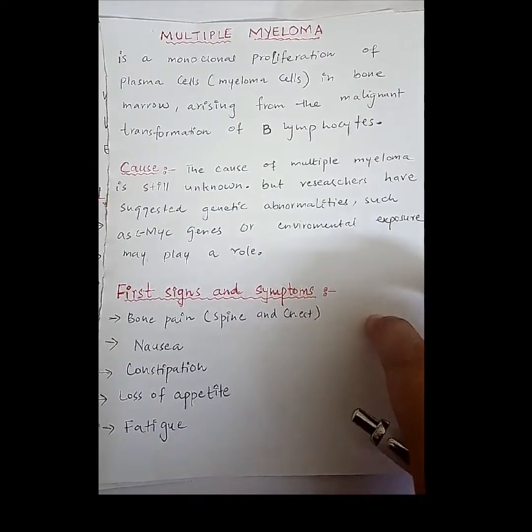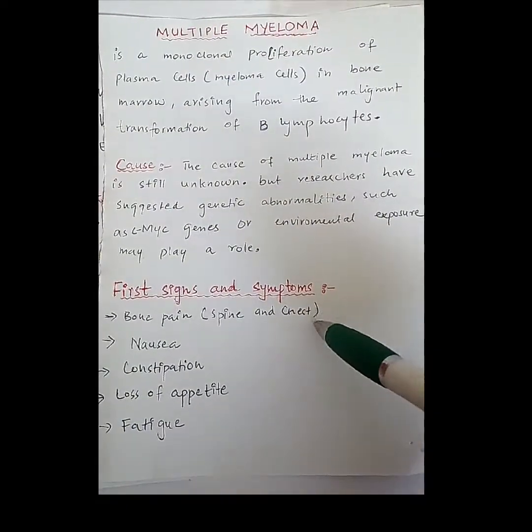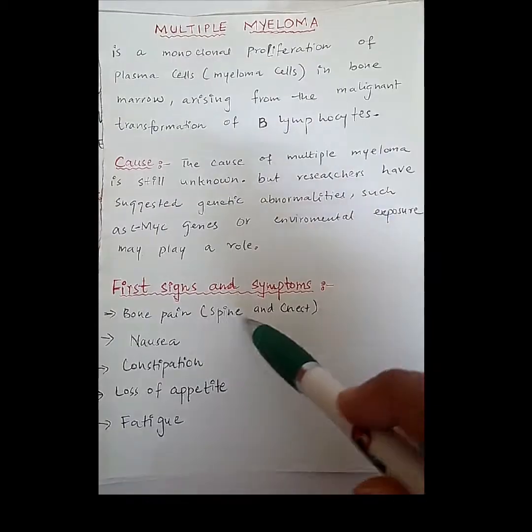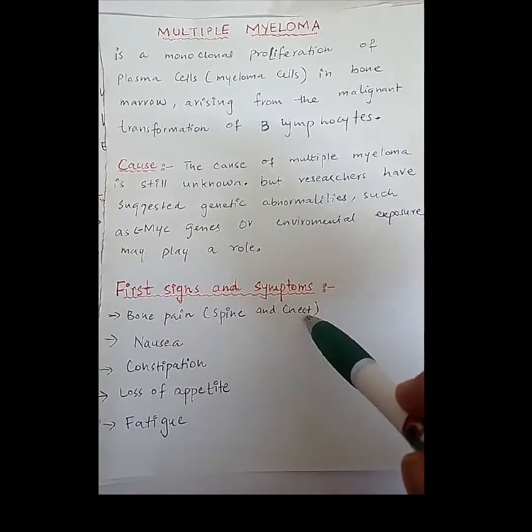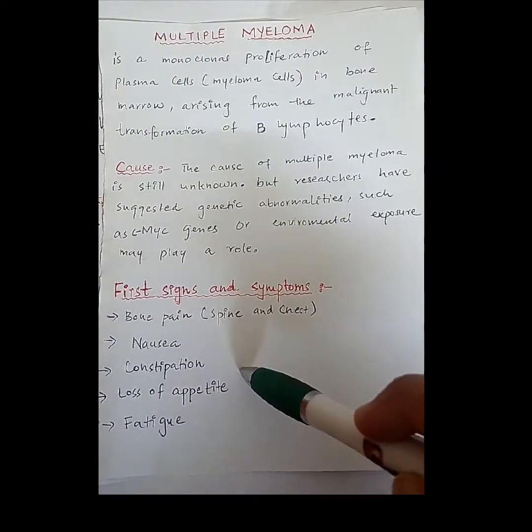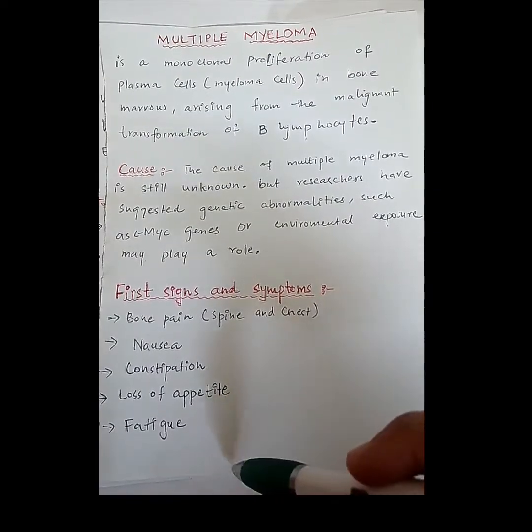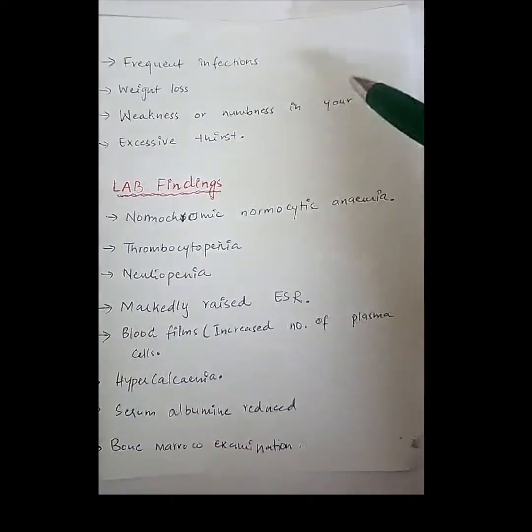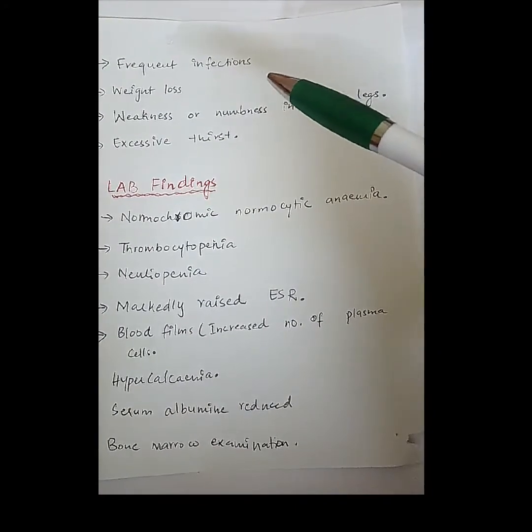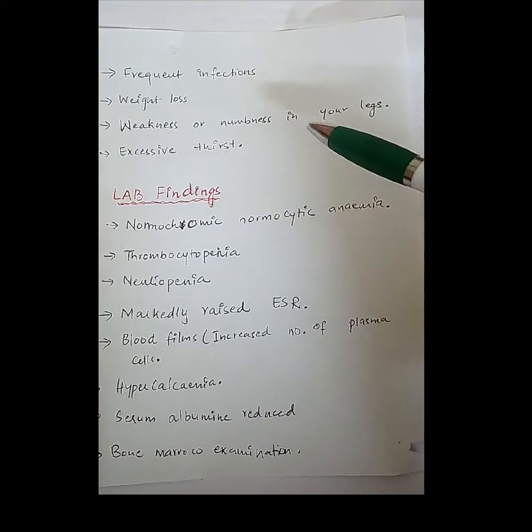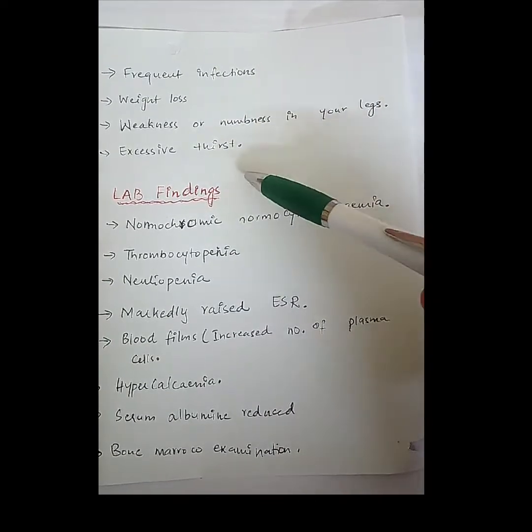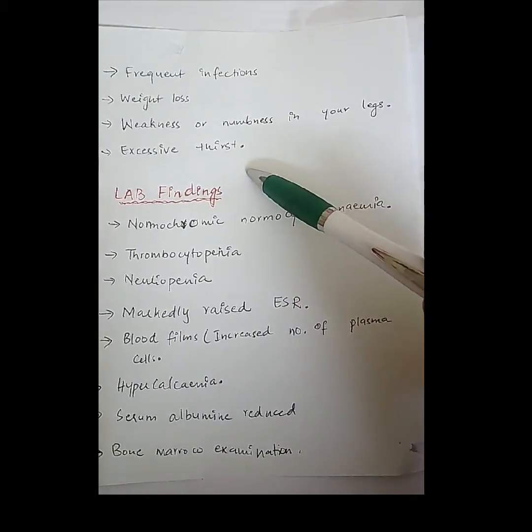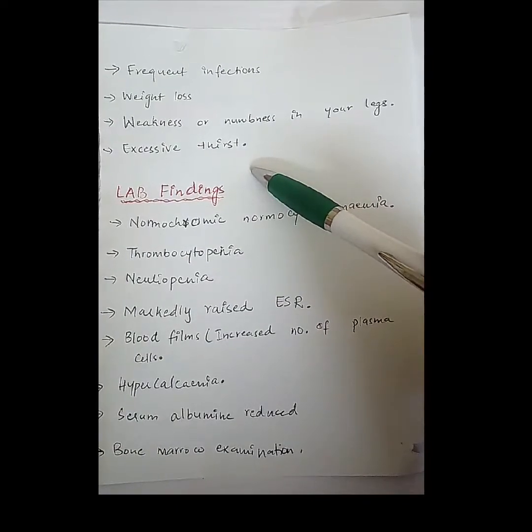First signs and symptoms include bone pain, especially in the spine and chest area, nausea, constipation, loss of appetite, fatigue, frequent infections such as sore throat and fever, weight loss, weakness or numbness in the legs, and excessive thirst. These are the most common signs and symptoms observed in multiple myeloma patients.